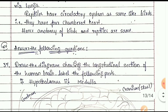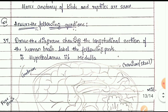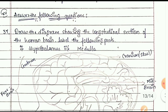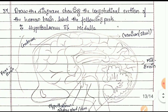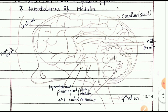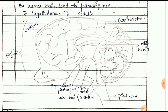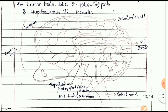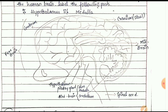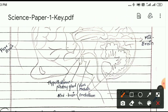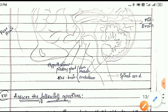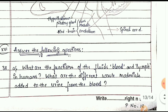Question 37 is a four-mark question. Draw the diagram showing the longitudinal section of the human brain and label the hypothalamus and medulla. You can see the cerebrum, forebrain, midbrain, cerebellum, hypothalamus, hindbrain, pons, and medulla. Practice labeling these correctly.